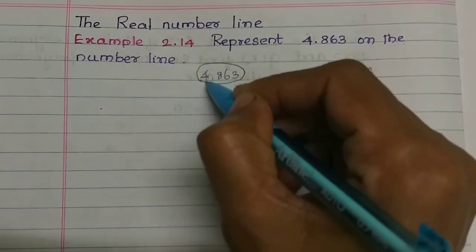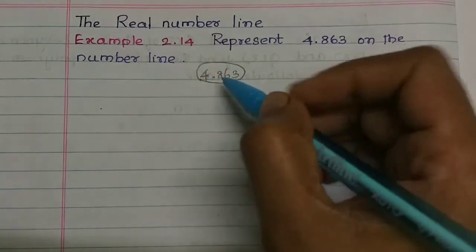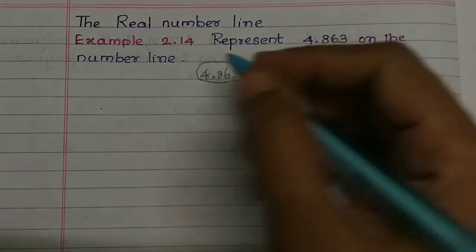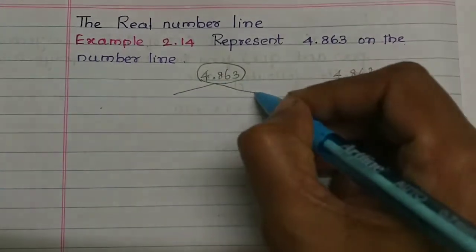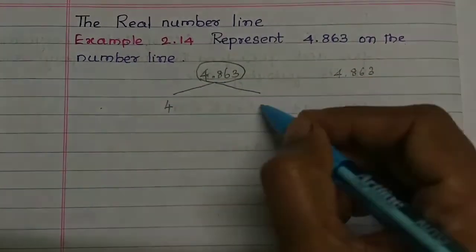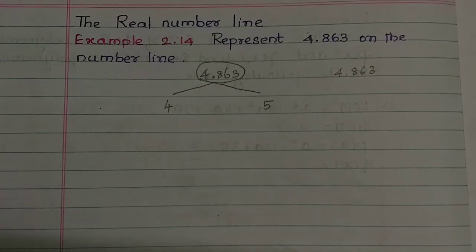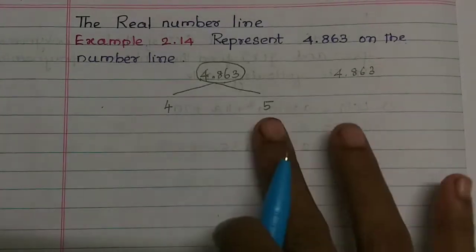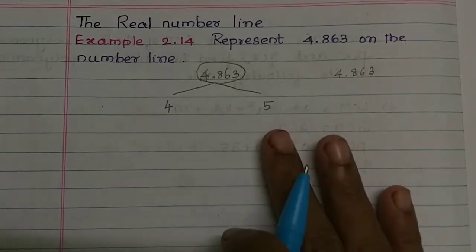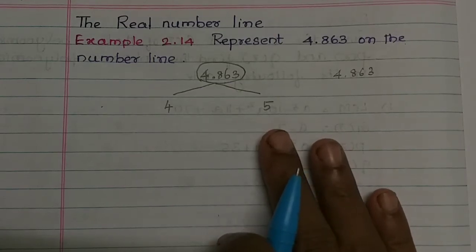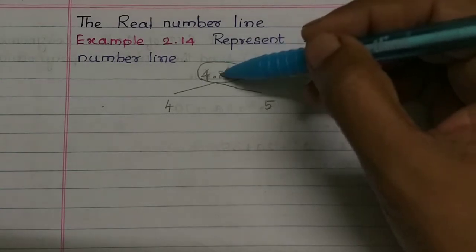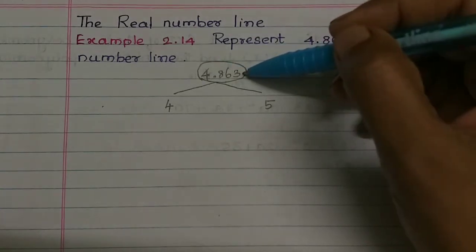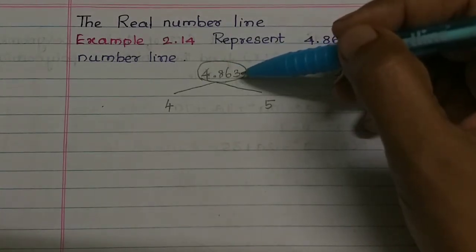The whole number part is 4. So 4.863 lies between 4 and 5. We need to look at where 4.863 falls between 4 and 5 on the number line. If we look at the number 4, we can draw the position of 4.863.